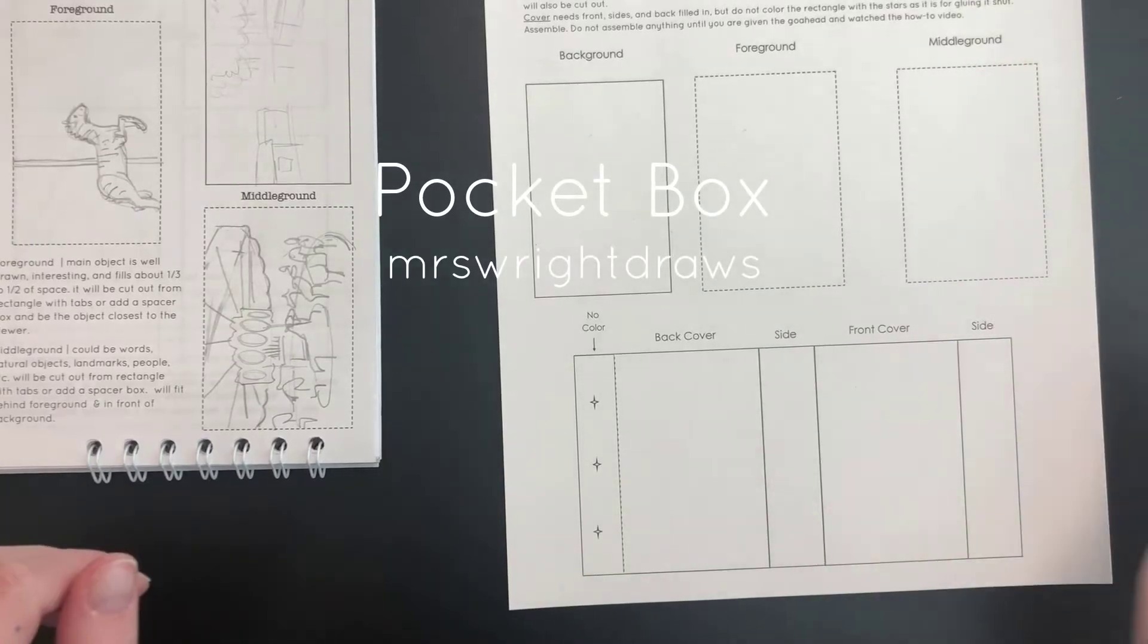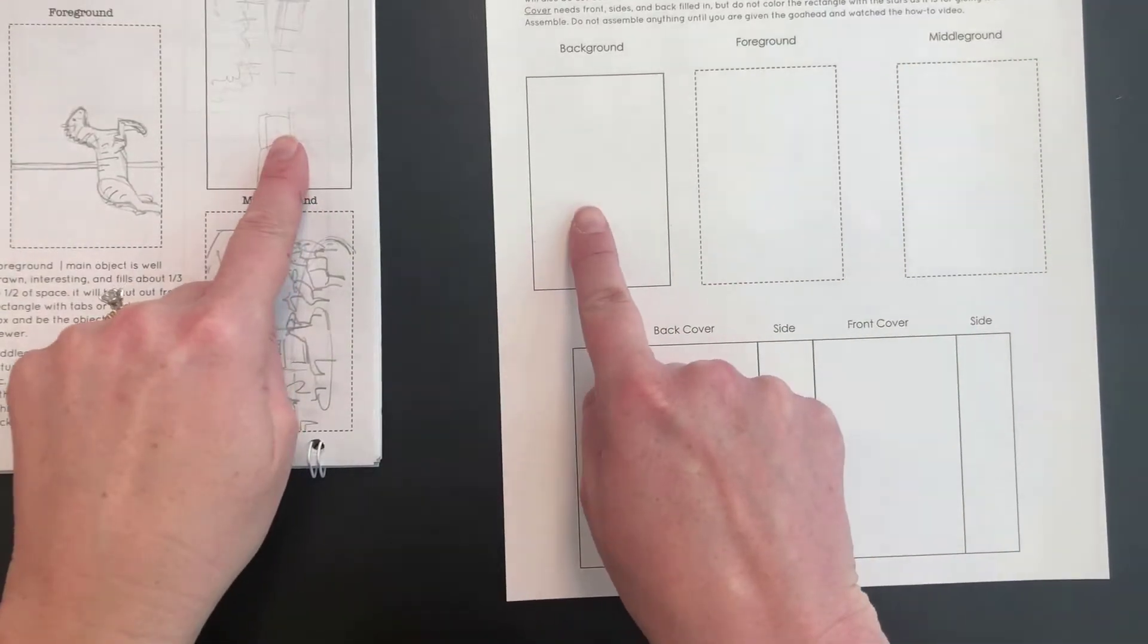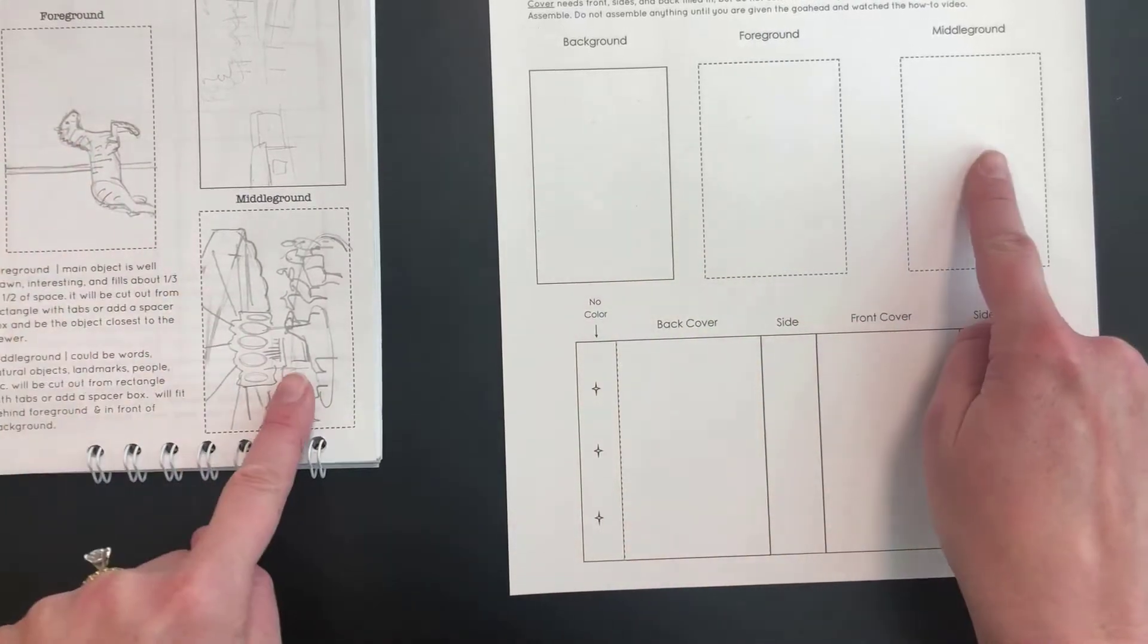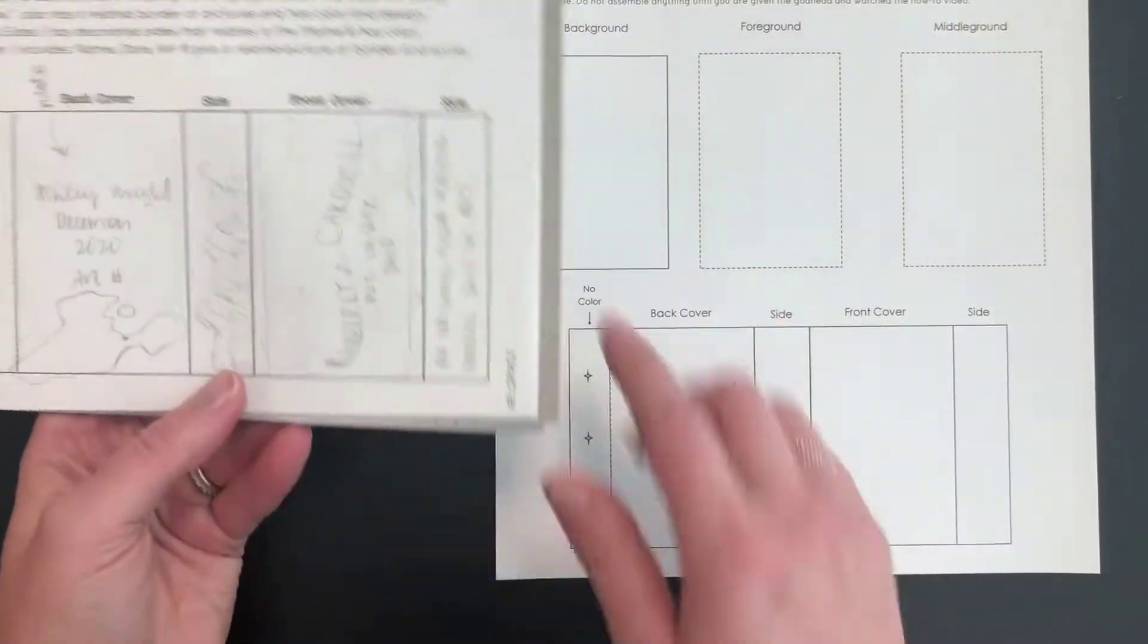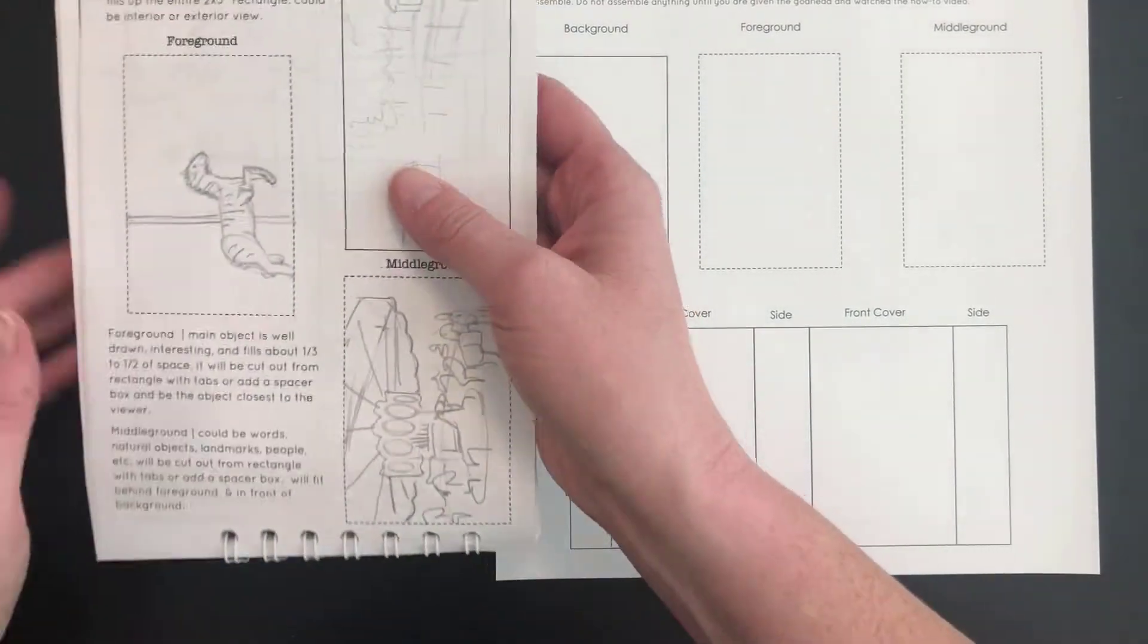To start your final draft pocket box, you need to first refer to the expectations and grading rubric to make sure you have everything that you need for each section. Don't make any mistakes on this piece of paper. It is the one that is going to be cut out and glued into the box for your major grade.